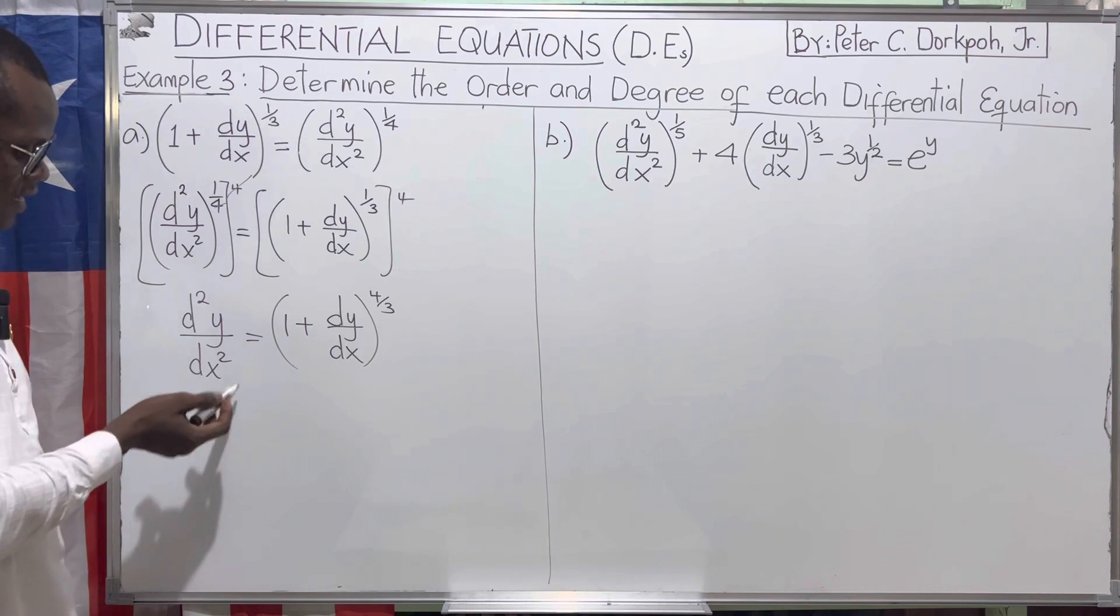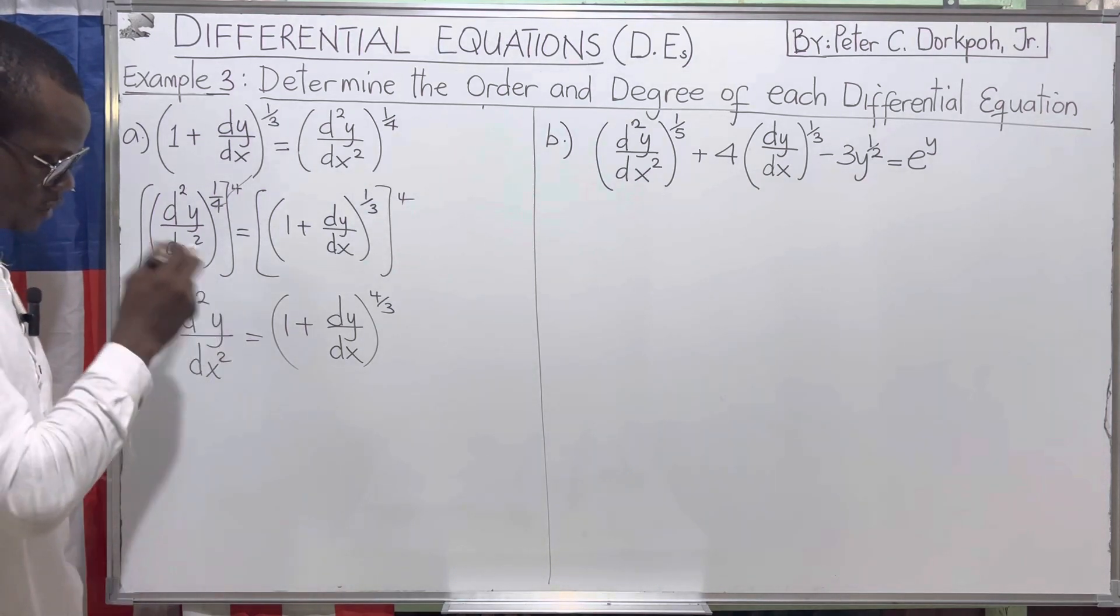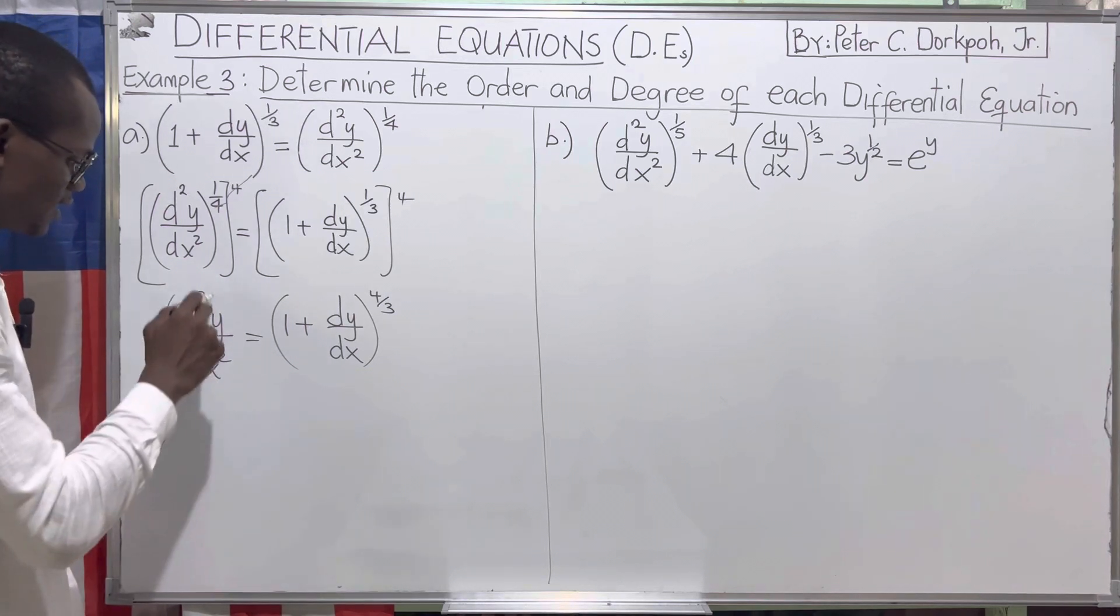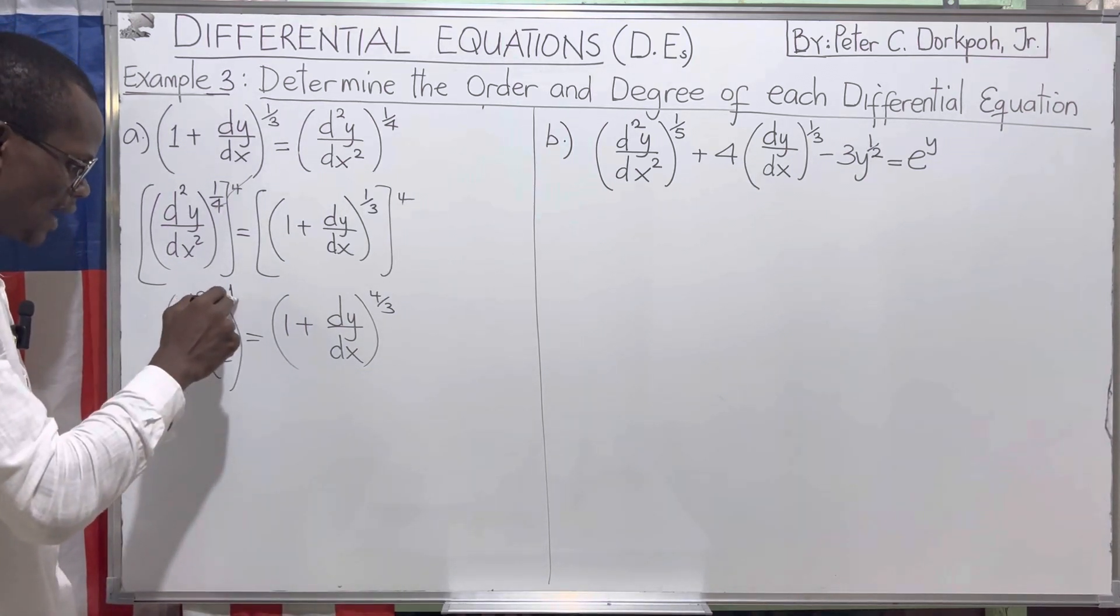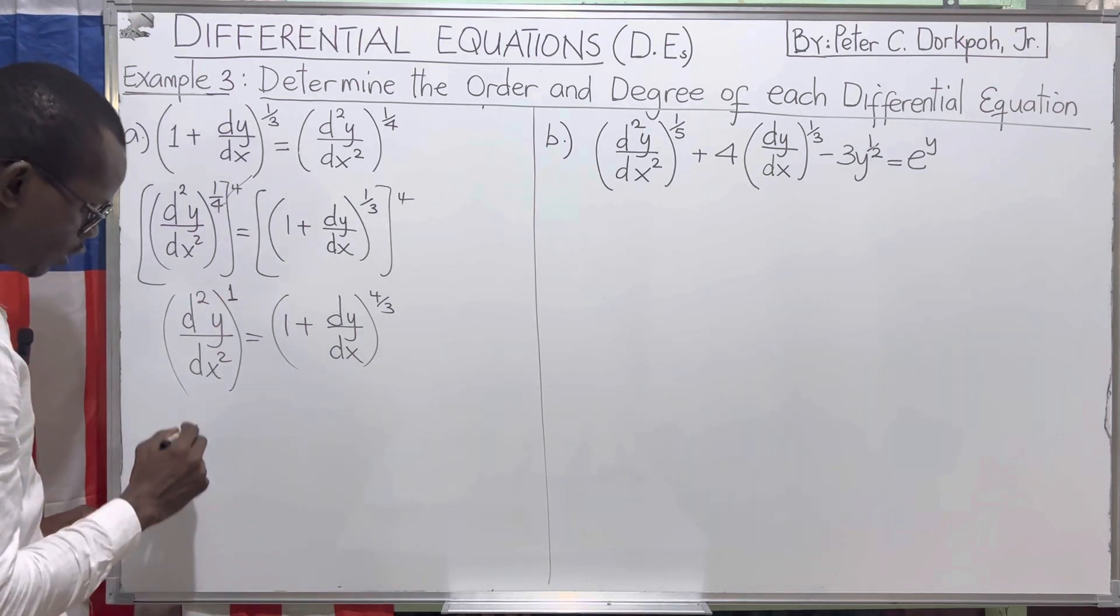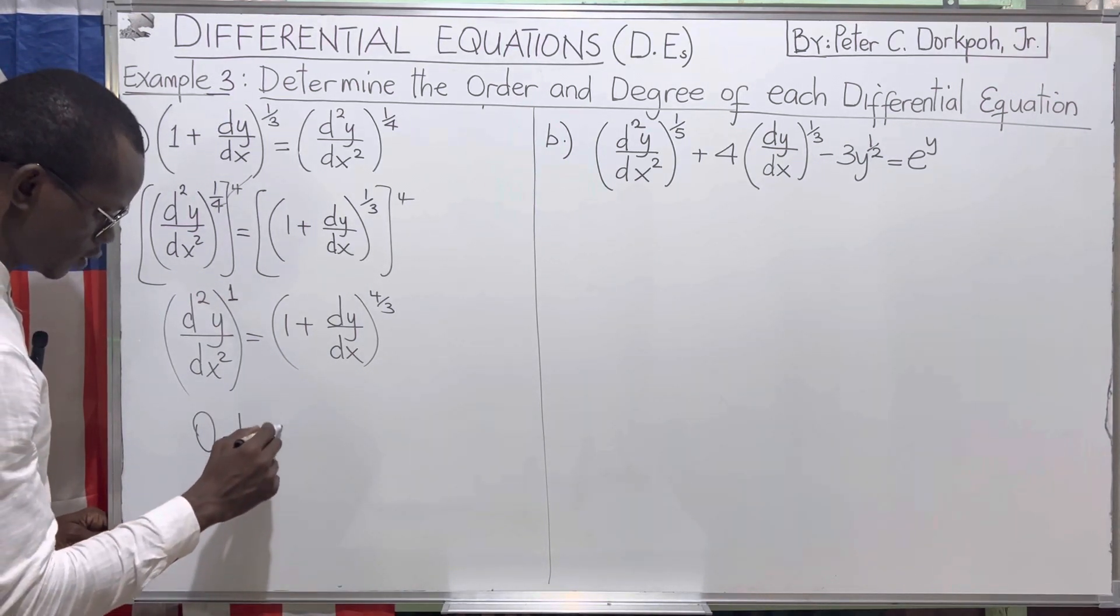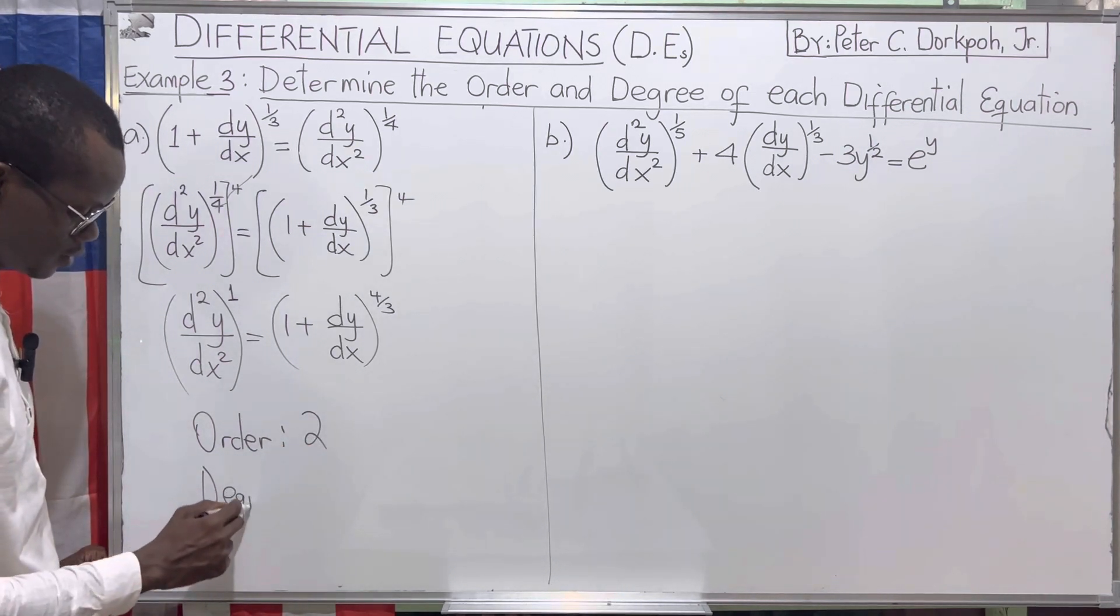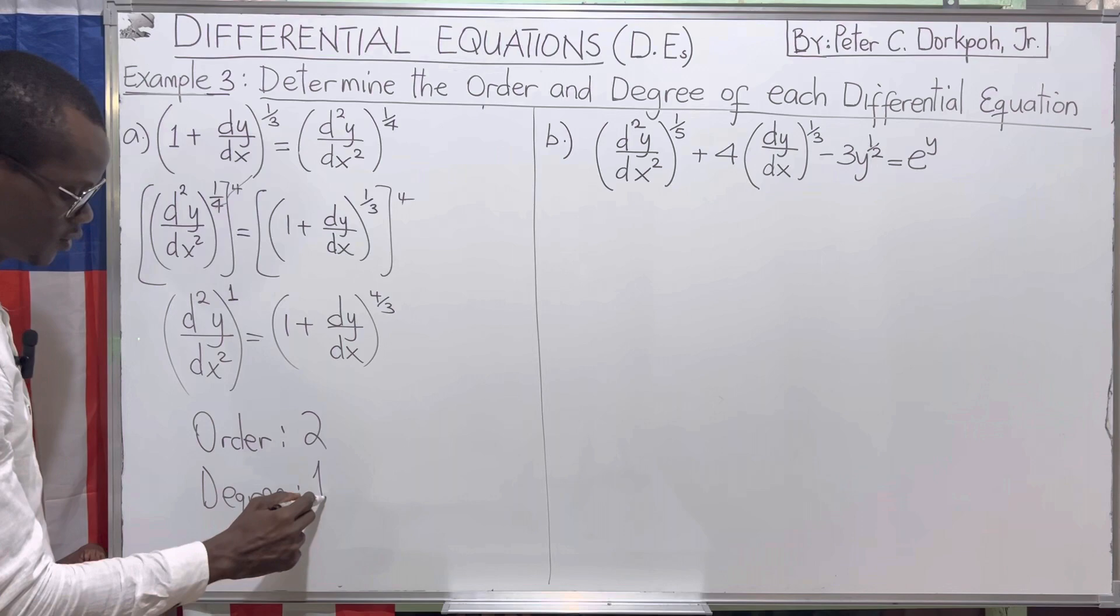Because this highest derivative now has been solved for, we can clearly determine that the power of this highest derivative is just one. So the order is equal to two and the degree is equal to one.